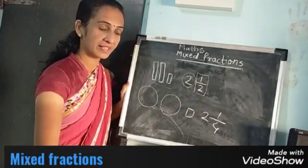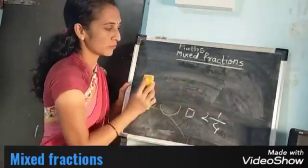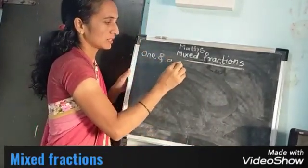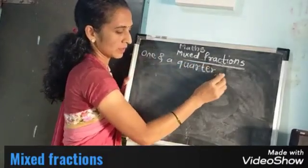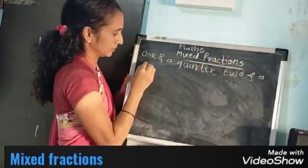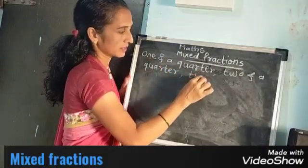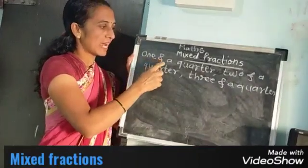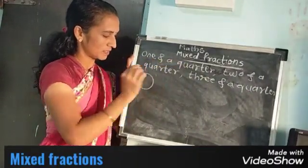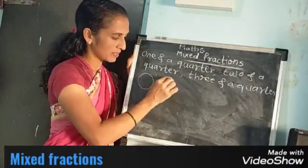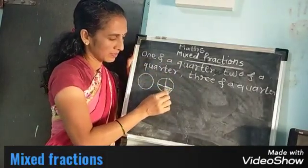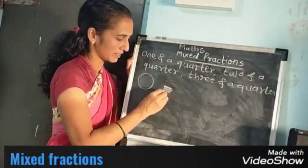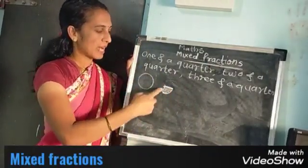We will see the points of mixed fractions in detail. The first point: one quarter, one and a quarter, two and a quarter. We have to see this point. One and a quarter — how to write it? Quarter means make four equal parts and select one part. You can write the fraction as a figure.